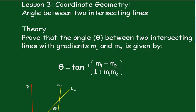Theory. Prove that the angle theta between two intersecting lines with gradients m1 and m2 is given by the formula theta equals the inverse tan of m1 minus m2 over 1 plus m1 m2.